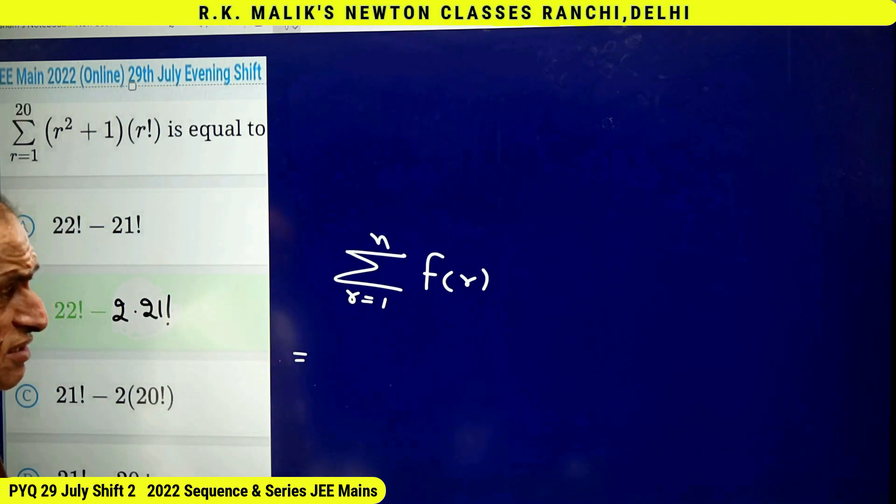Previously, one term of one bracket and one term of the next were getting cancelled. When there is a difference of two, a term of this bracket gets cancelled not with the next bracket but with the one after that — the third term. In the end, the remaining terms will be g(n+2) plus g(n+1) minus g(2) minus g(1).